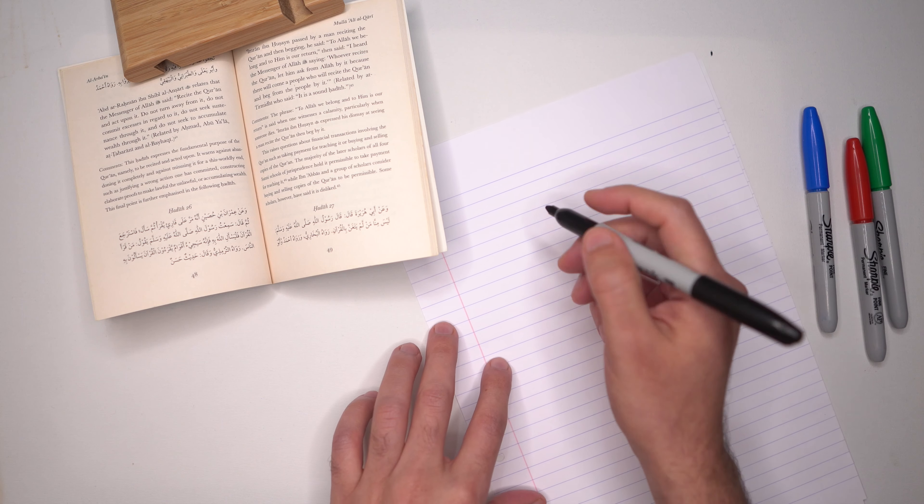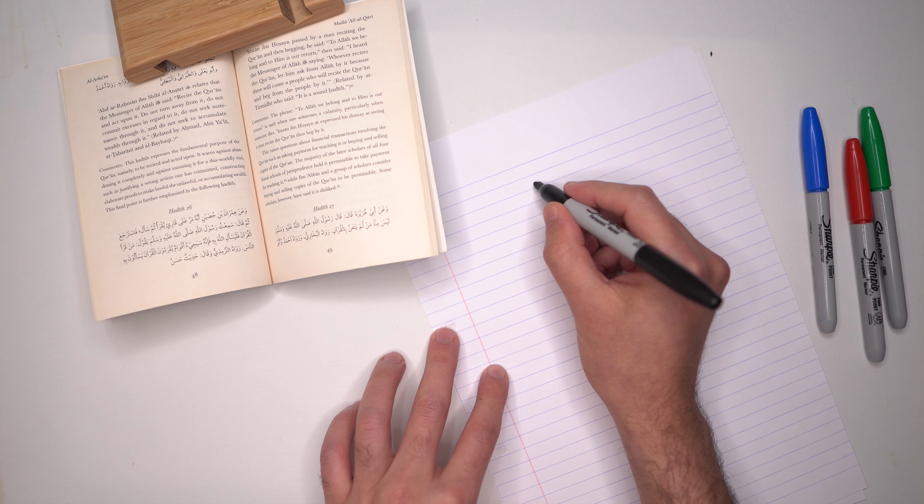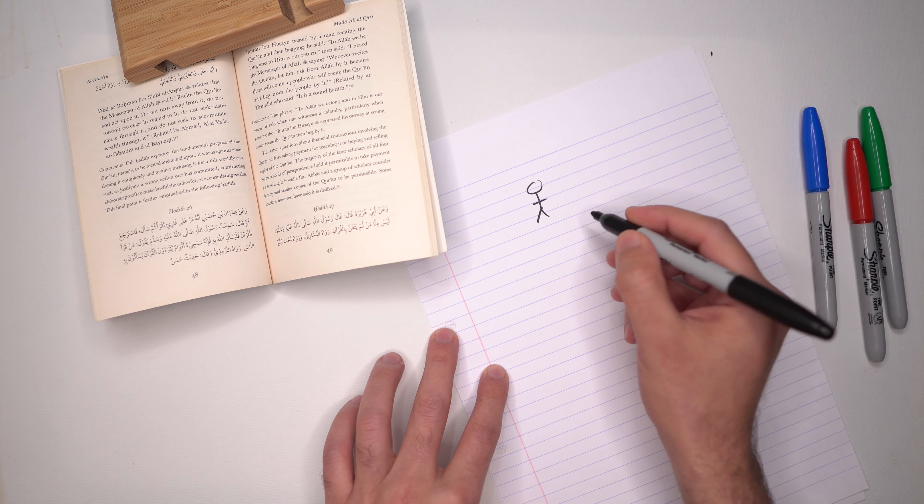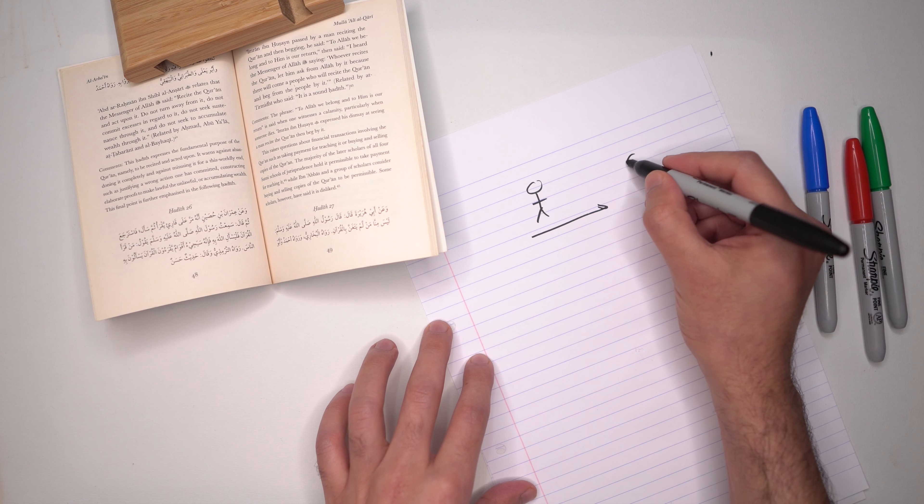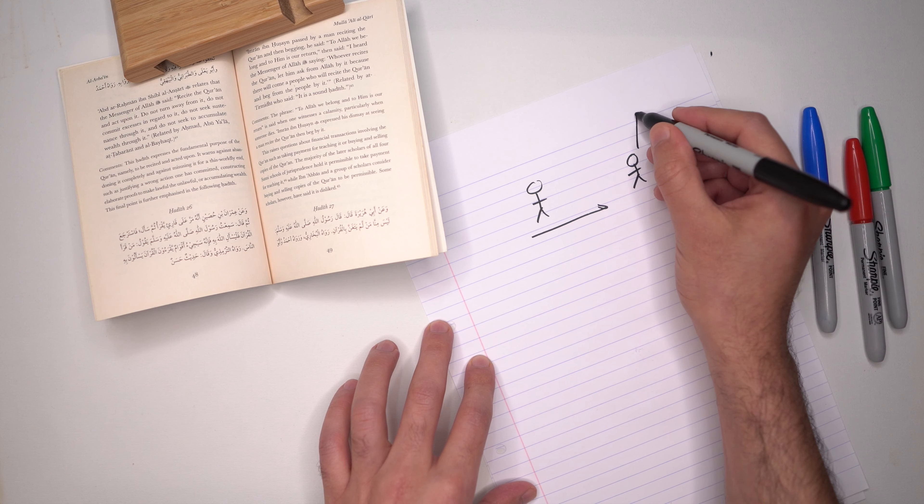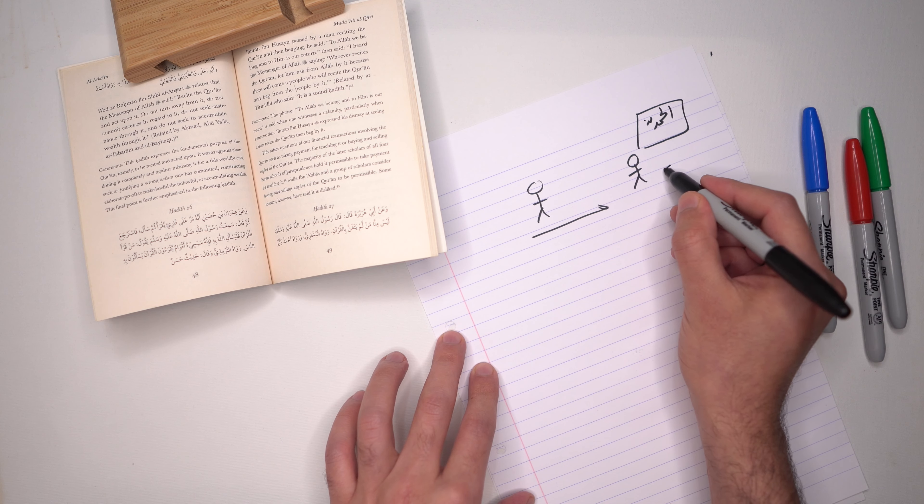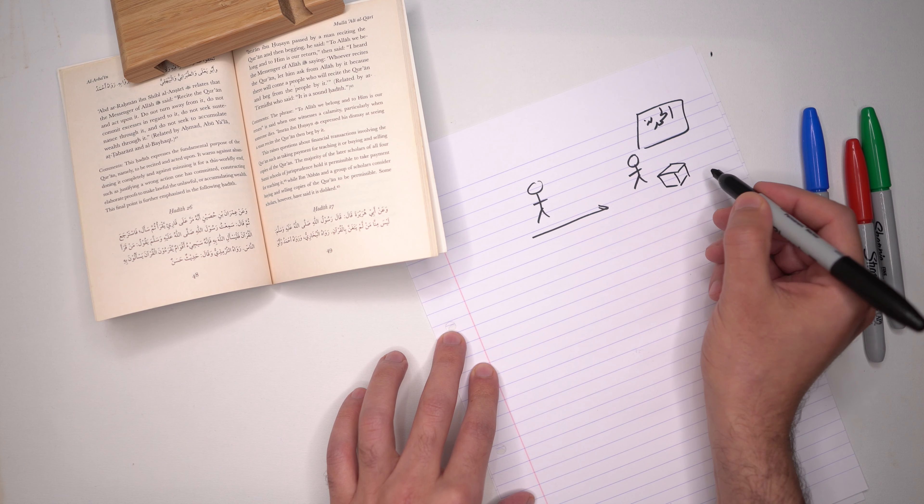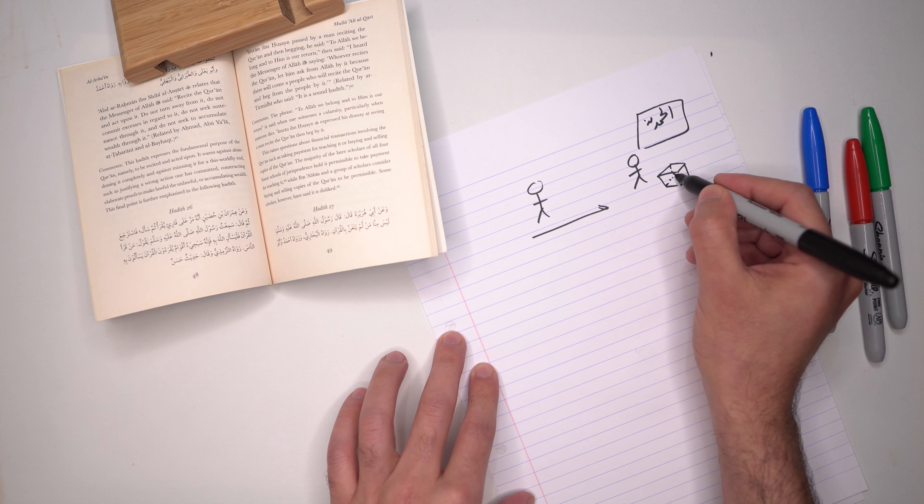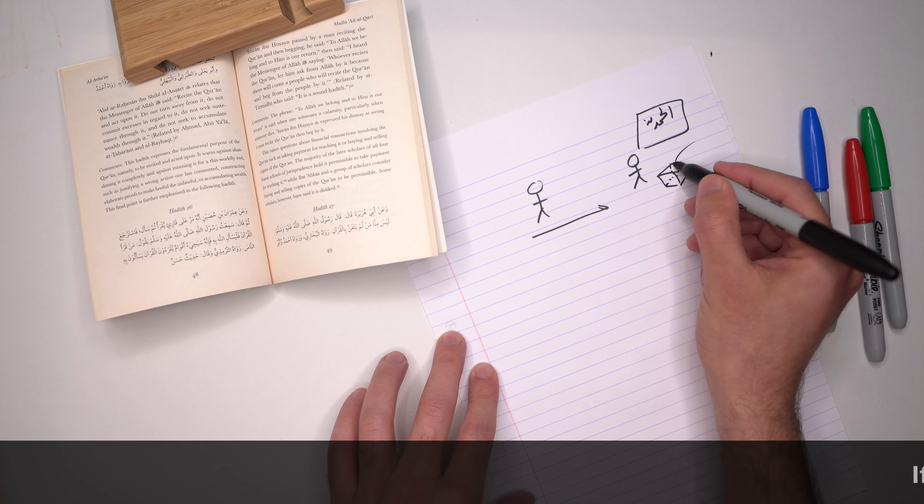So Imran ibn Hussain is a famous companion of the Prophet sallallahu alayhi wa sallam. So he's walking one day and he sees this man, and there's this man is reciting the Quran, and he is begging people to give him money. Just like sometimes you go into the markets and you might see someone maybe singing or something, and he has a box there and people are throwing money into the box.